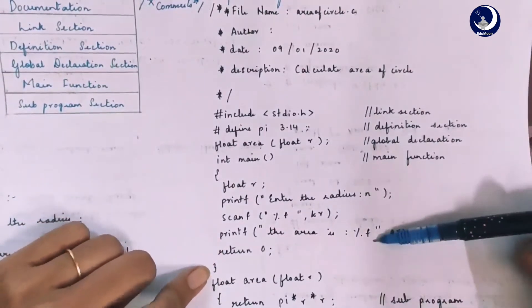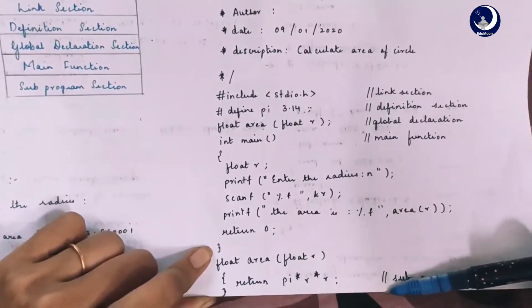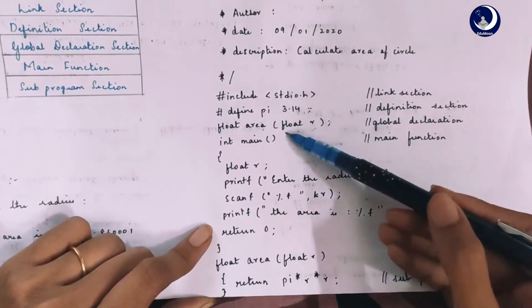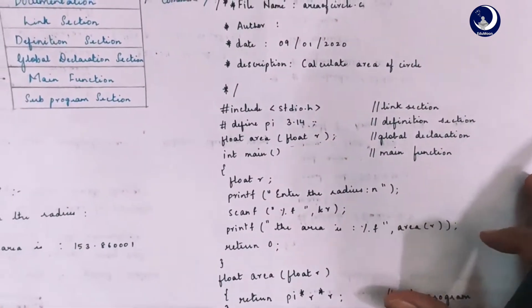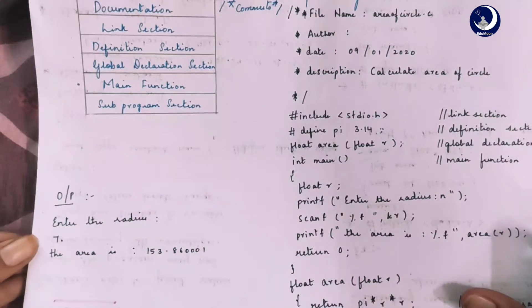After the executable section, the last section is the subprogram section where a function is being referred here. The output of the program is given here.